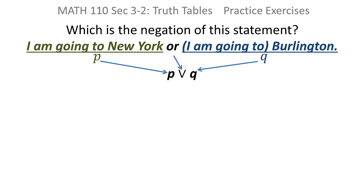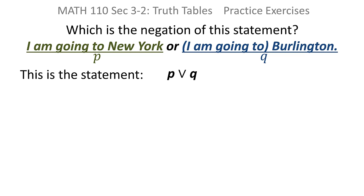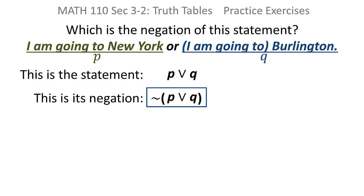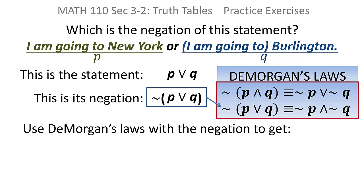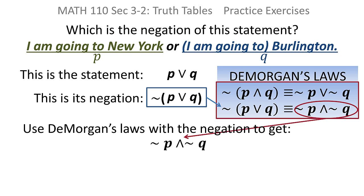So really what they're asking is: what is the negation of that or statement? We've learned about that — one of DeMorgan's laws says that the negation of an or is an and. To negate an or, it becomes an and, and the negation distributes to both P and Q. DeMorgan's laws tells us the negation of an or statement becomes an and with each simple statement negated.